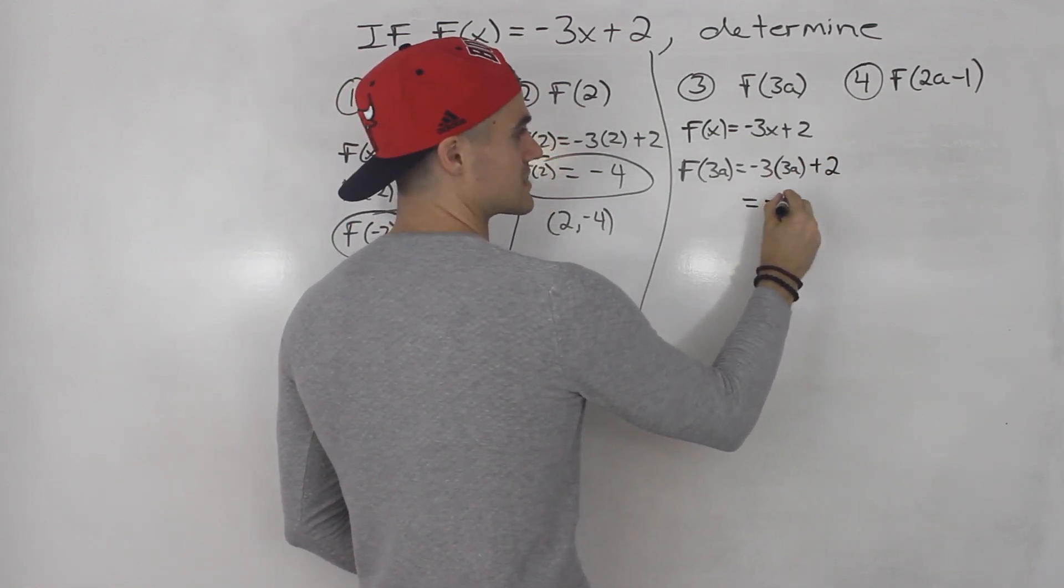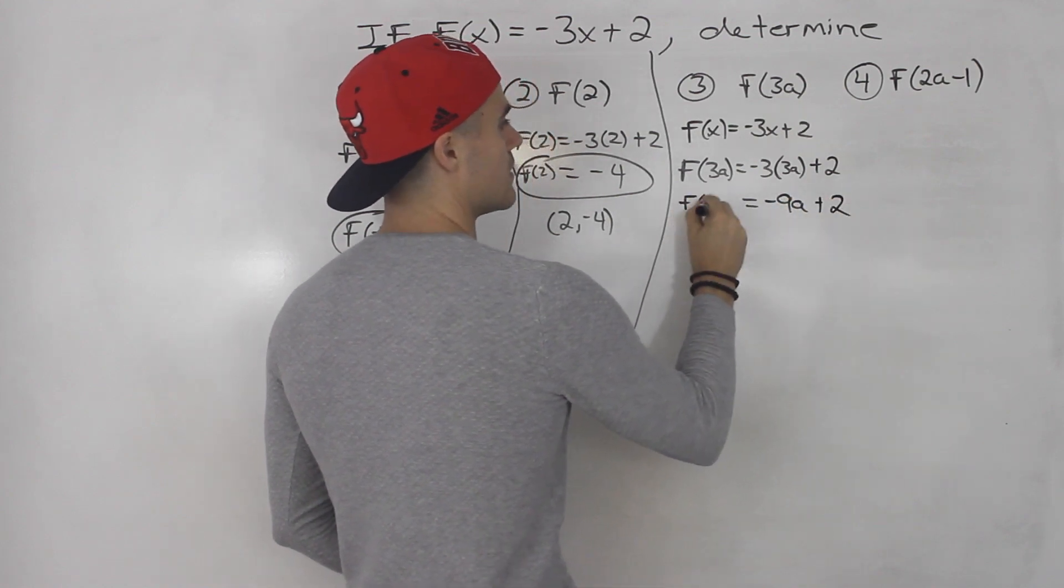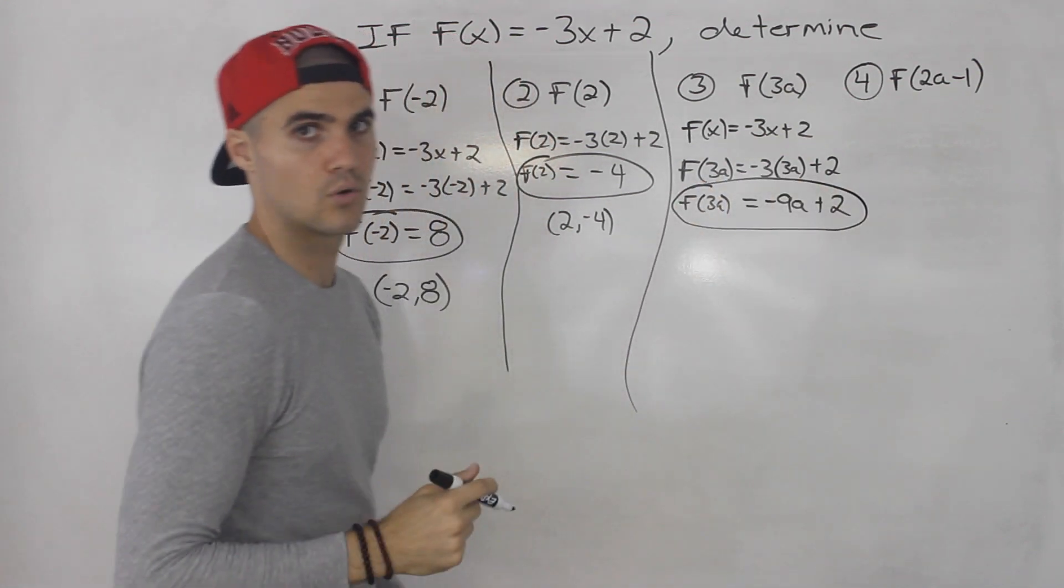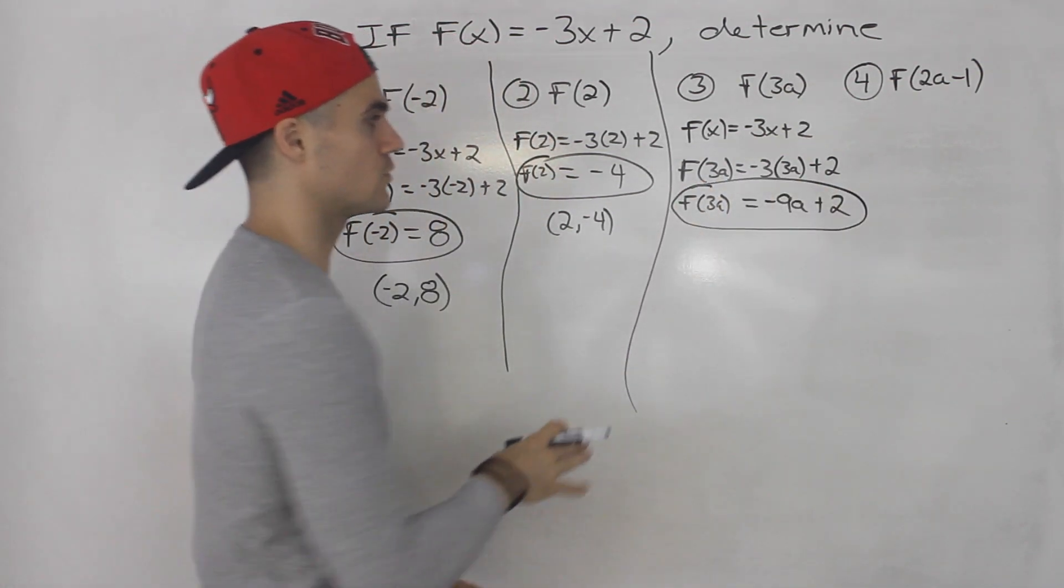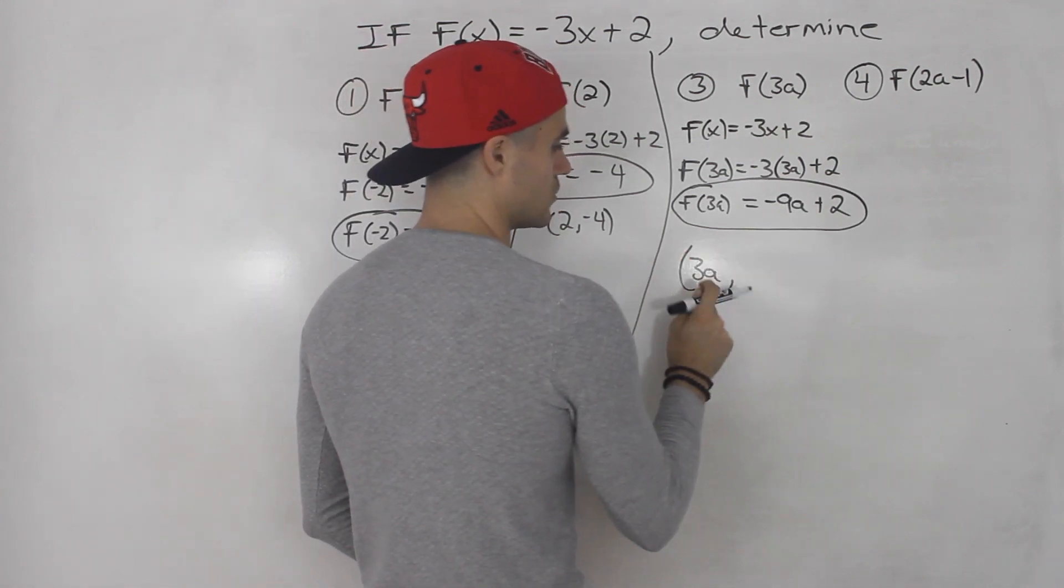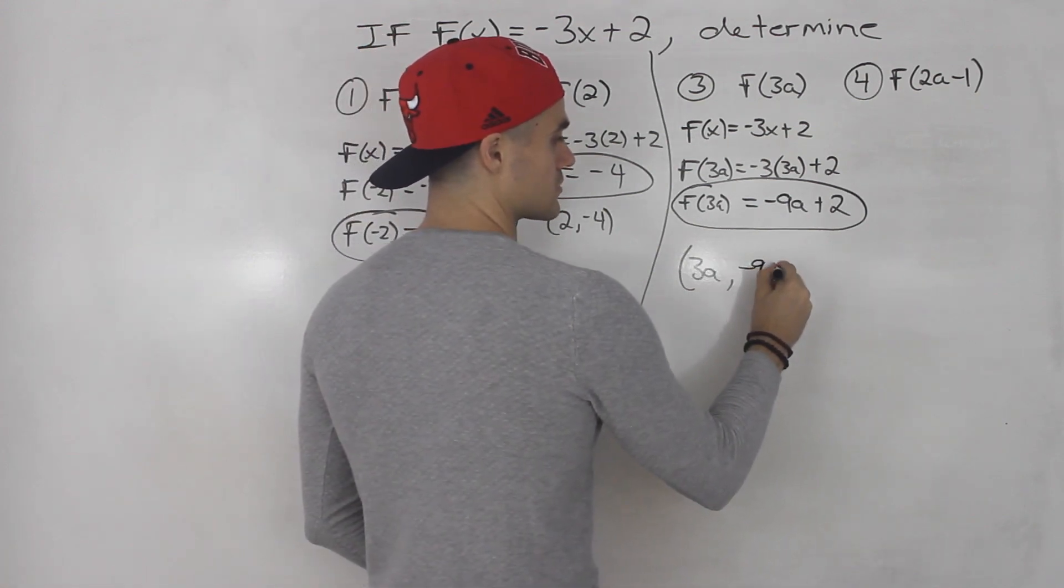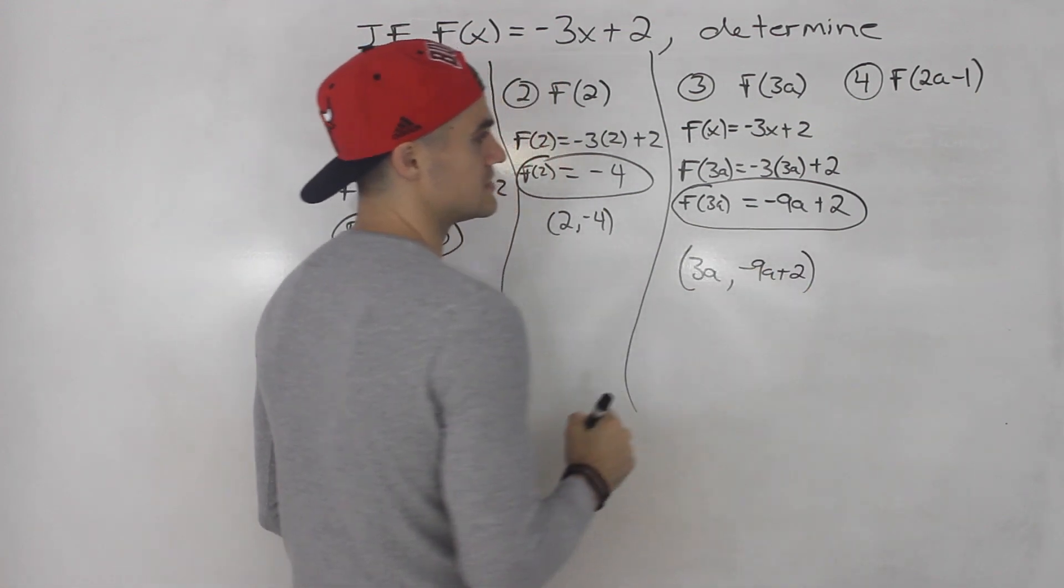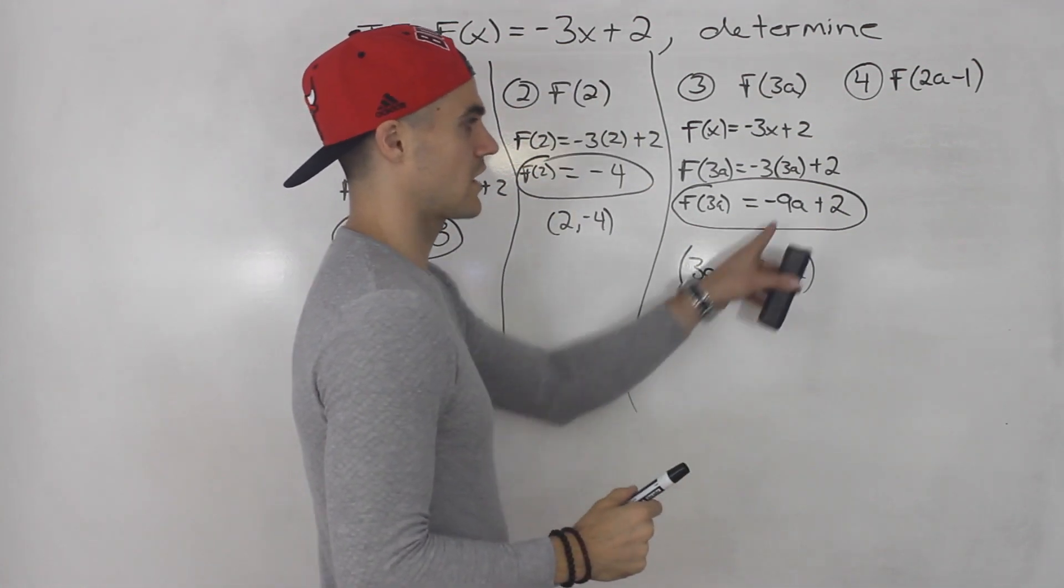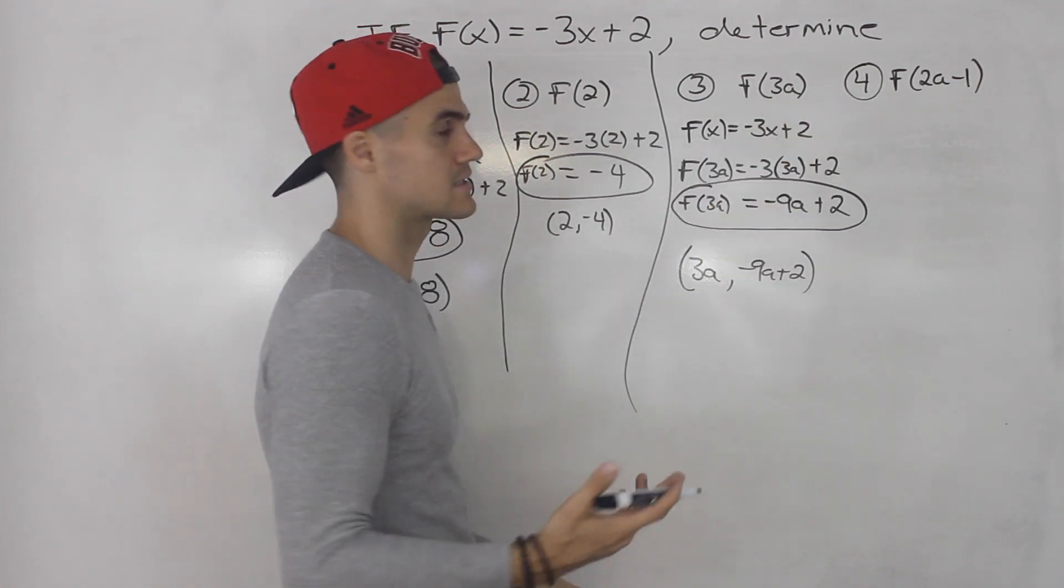Then negative 3 times 3a gives us negative 9a, and this is plus 2. This does not simplify any further. So that is your final answer. If you wanted to show this in coordinate form, 3a would be the value of the independent variable, and negative 9a plus 2 would be the dependent variable for this function. So sometimes your answers will be expressions if what you're plugging in for x is an expression.